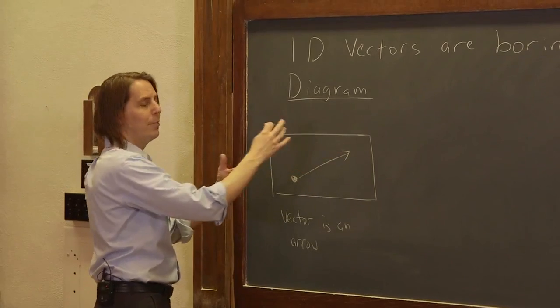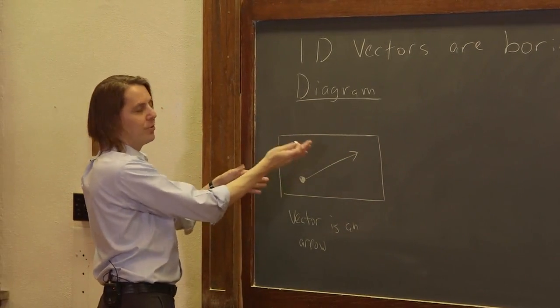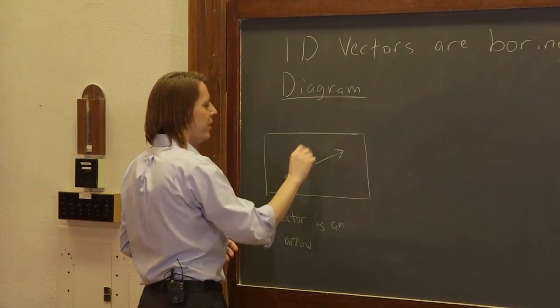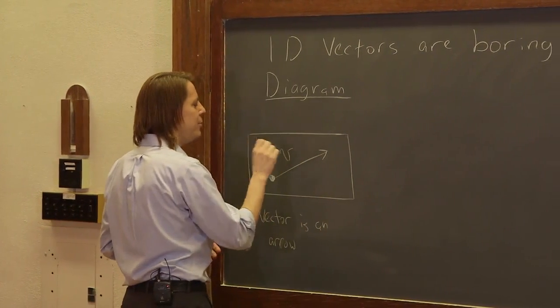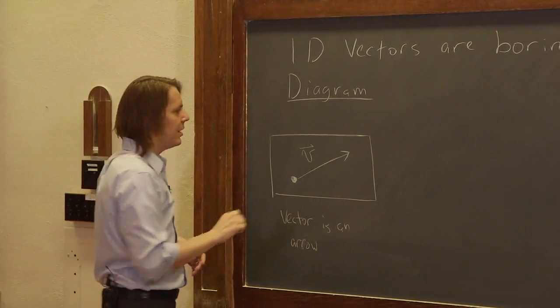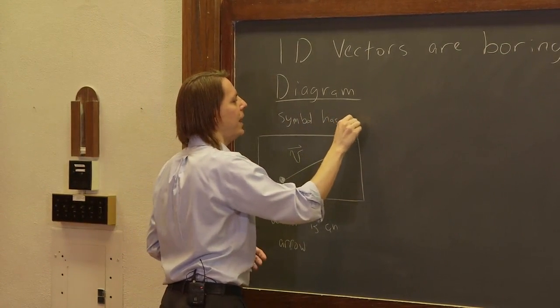The length of the arrow represents how big the velocity is—how much velocity there is. The direction represents the direction. The symbol that you put near the arrow to say what it is is the V we use for velocity, with a little arrow hat on it. So the symbol for any vector has an arrow hat.